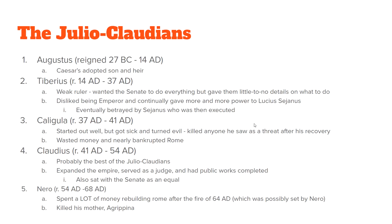The first group of Roman emperors were known as the Julio-Claudians — the direct descendants of Julius Caesar. You have Augustus, Caesar's adopted son, then Tiberius, a relative of Augustus. Tiberius was a fairly weak ruler who basically just wanted the title and wanted the Senate to do everything. He really didn't like being emperor and gave one of his friends more and more power.